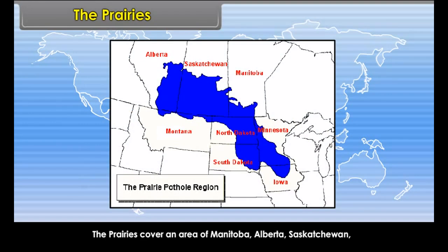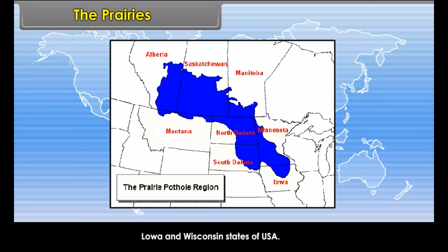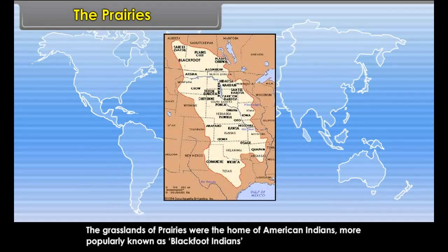The Prairies cover an area of Manitoba, Alberta, Saskatchewan, and Ontario Provinces of Canada, and North Dakota, South Dakota, Minnesota, Iowa, and Wisconsin states of USA. The grasslands of Prairies were the home of American Indians, more popularly known as Blackfoot Indians.